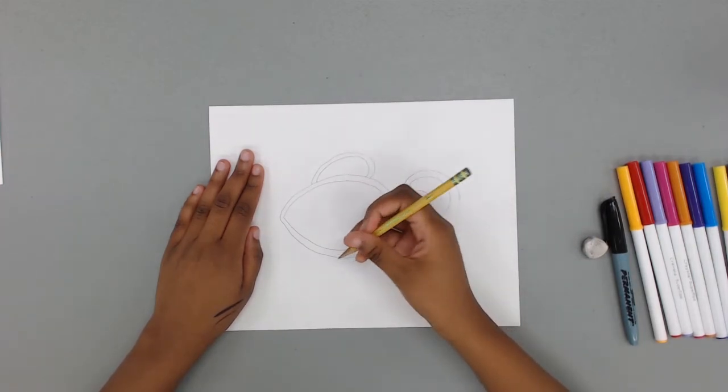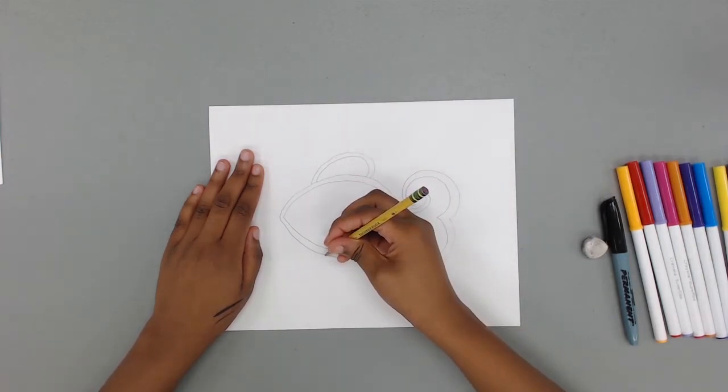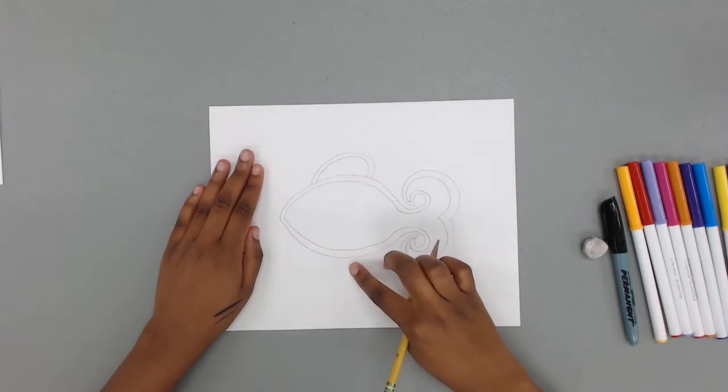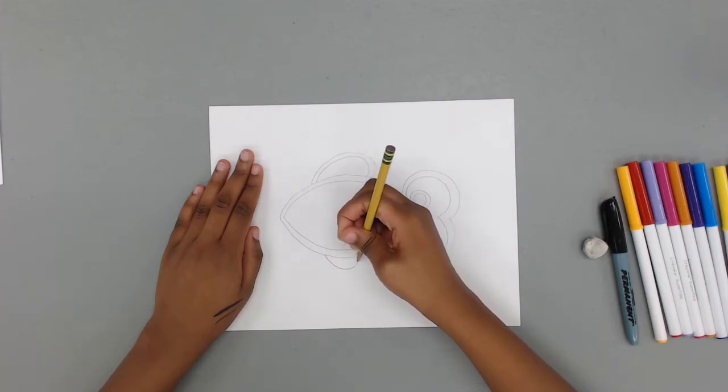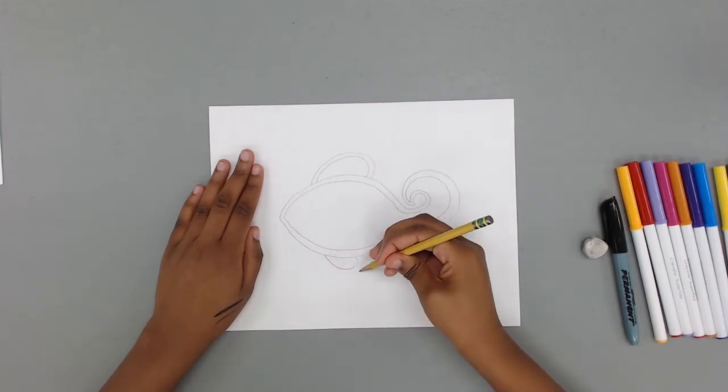Next we're going to add the fish's fin, which is our arm, at the bottom of our fish. This one's going to be a little bit smaller and also looks like half of a heart. Don't forget to add the border.